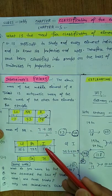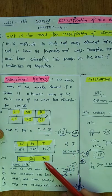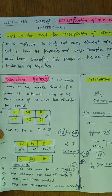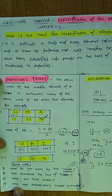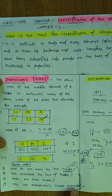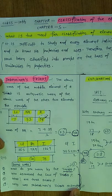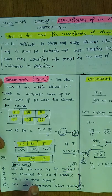So aapne lithium ke triad ko pada, chlorine ke triad ko pada aur sulfur ke triads ko pada. Now a very important question arises that why was the Dobereiner triad discarded? Means Dobereiner triad ko discard kyu kiya gaya?